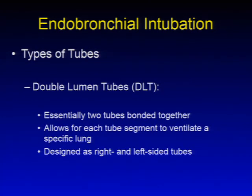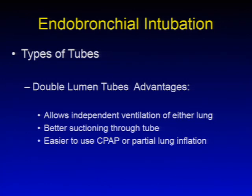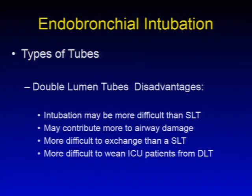Types of tubes for endobronchial intubation include double lumen tubes, or DLTs — essentially two tubes bonded together, allowing each segment to ventilate a specific lung, designed as right and left-sided tubes. Advantages include independent ventilation of either lung, better suctioning, and easier use of CPAP or partial lung inflation. Disadvantages include more difficult intubation, potential for more airway damage, more difficult to exchange than a single lumen tube, and more difficult to wean ICU patients.